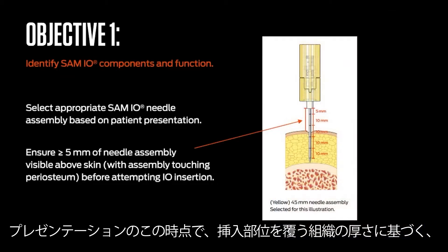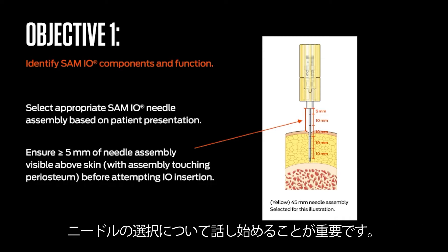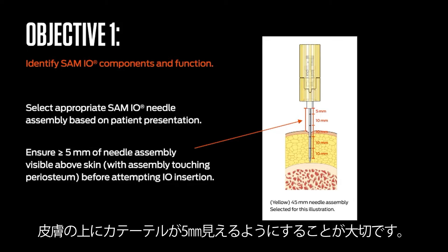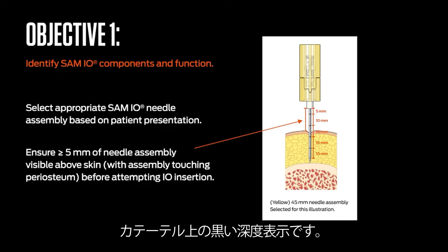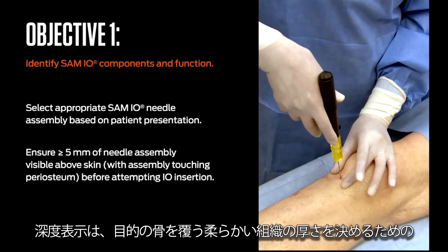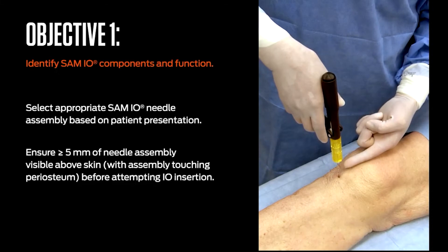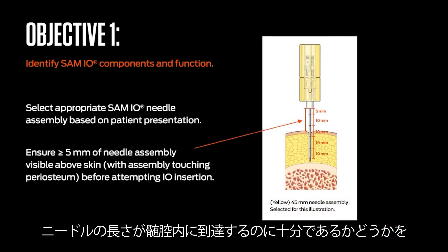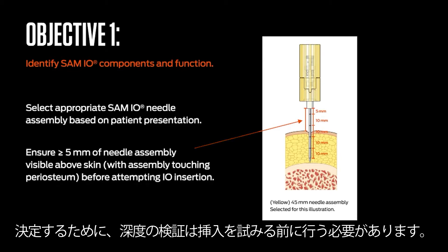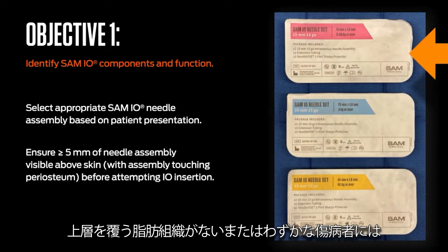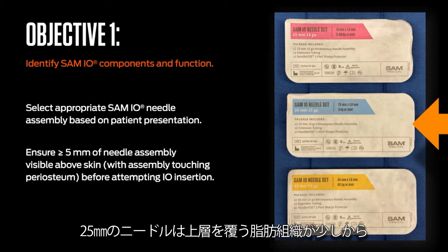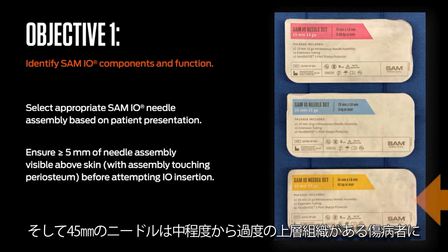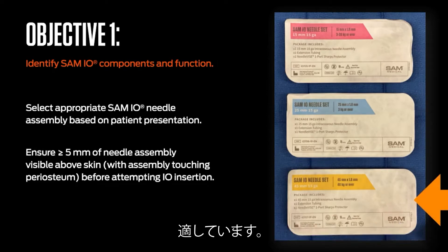At this point in the presentation, it's important to begin discussing needle assembly selection based upon overlying tissue depth at the insertion site. Ensuring that 5 mm of catheter is visible above the skin is important. The most accurate determinant of needle assembly length related to safe osseous access are the black depth indicators on the catheter. Depth indicators function as a measuring guide to determine the amount of soft tissue overlying targeted bone. Depth verification must be accomplished prior to the insertion attempt in order to determine if the needle assembly length is adequate to reach the medullary space. The 15 mm needle assembly is suggested for patients with non-existent to limited overlying adipose tissue. The 25 mm needle assembly is suggested for patients with minimal to moderate overlying adipose tissue. The 45 mm needle assembly is suggested for patients with moderate to excessive overlying tissues.